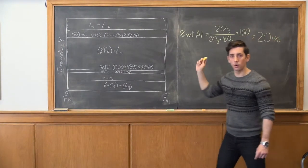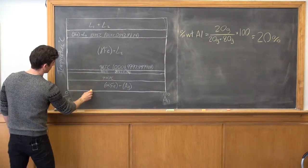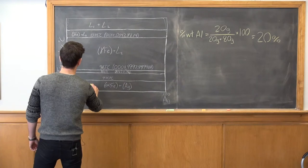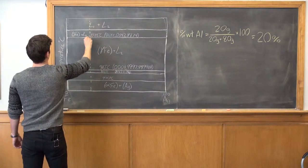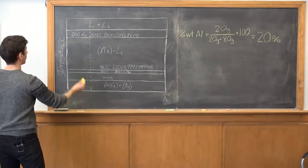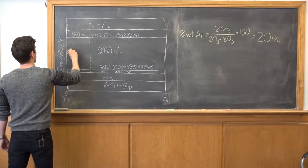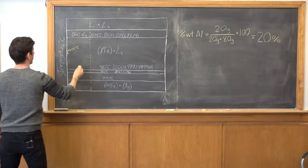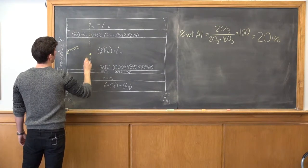So then we refer over to our phase diagram and 20 percent is about here. So I'm going to draw a vertical line up from there. And we're at 1200 degrees Celsius. So 1200 degrees is somewhere in the middle right about here.